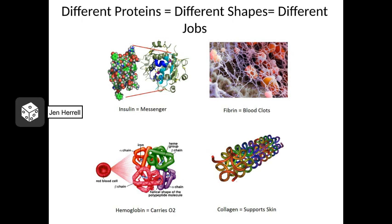Here we have hemoglobin. Hemoglobin carries oxygen in your blood. To do this, it has to bind to iron molecules, and in order to do that, it has to have this particular shape. Again, it has four subunits, all of which hook together. Here again we have collagen. Collagen is shaped like a bundle of springs, and it's found in the deeper layers of your skin — it's what allows your skin to remain springy, to stretch, and to pop back into place. So four different proteins, four different structures, four different jobs.